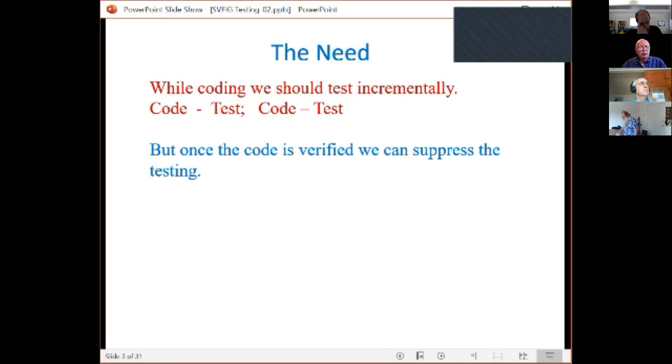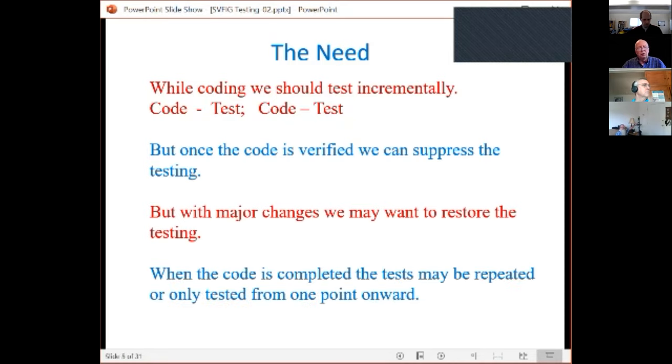This means each time we do a section of code we should have corresponding testing. But again, once the code is verified, then we can suppress the testing. However, every time we go back and make a major change, then we may want to restore testing. So there's a tension between how much testing do we retain. When the code is completed, I prefer to have a complete test suite available, but only to be able to turn it off and on when I wish.